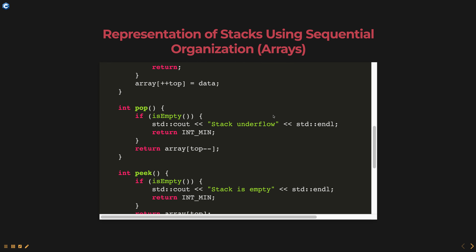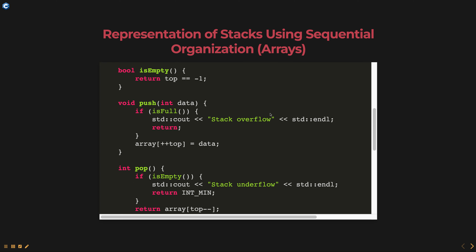The push method is used to add an element to the stack. Before adding the element, the method checks if the stack is full using the isFull method. If the stack is full, it prints stack overflow and returns. If the stack is not full, it increments the top variable and assigns the new element to the array at the top position.